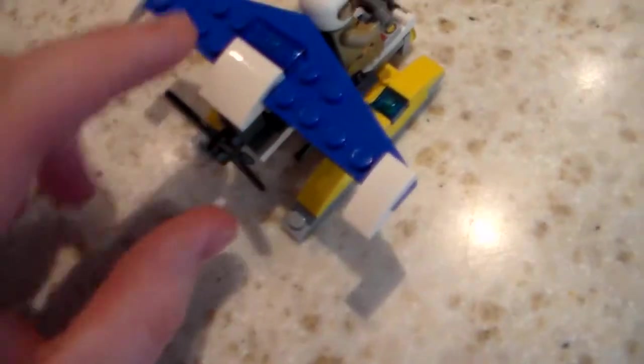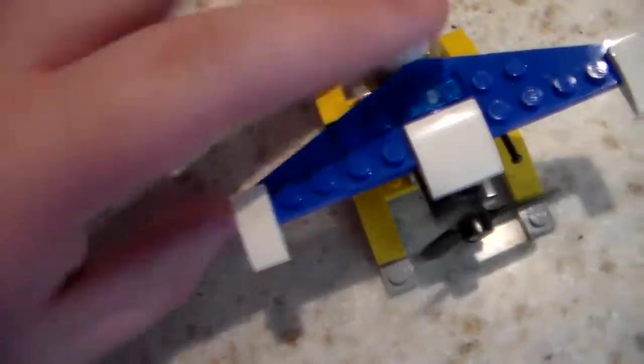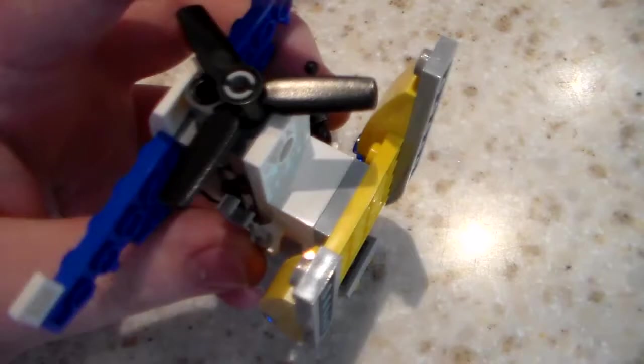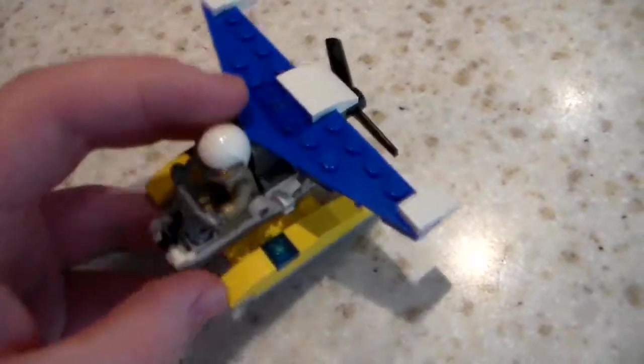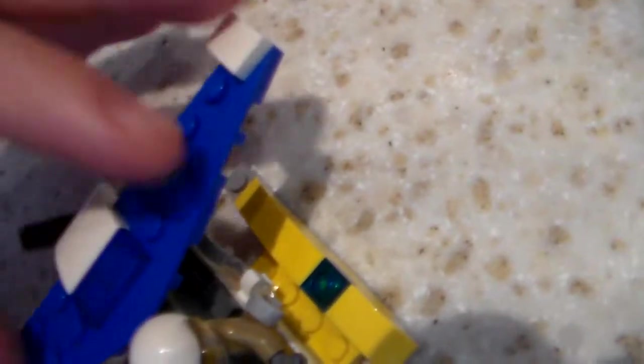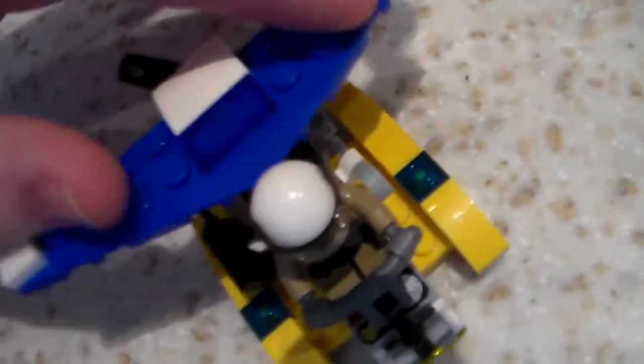You get one minifigure in it and a pretty nice build. A little propeller on the back that spins around. I have not tested to see if this actually does float, but this can twist back and forth like so.